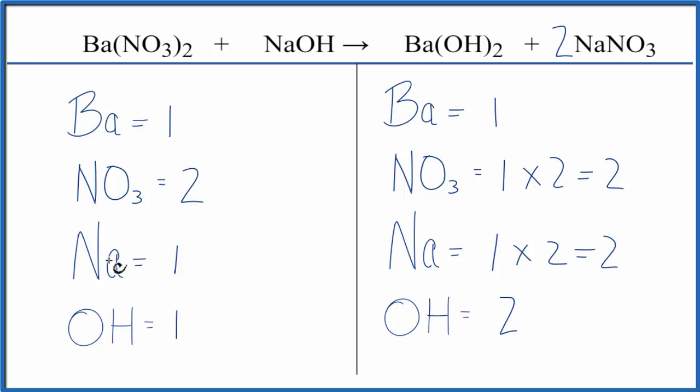Might as well balance the sodiums. And that might fix our hydroxides. So we have two here and one here. So we'll put a coefficient of two in front of the sodium hydroxide. One times two. That will give us two sodiums. Those are balanced.